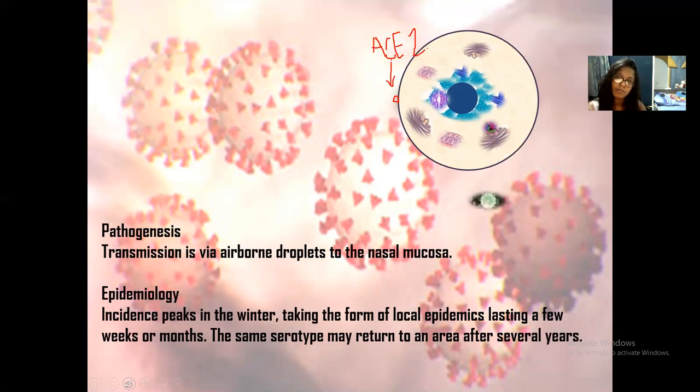Transmission is via airborne droplets to the nasal mucosa. It is also fomite and airborne at the same time. The epidemiology — the study of the virus, its peaking, and the statistics — indicates that it takes place in winter, taking the form of local epidemics that last a few weeks or months, as is happening right now.